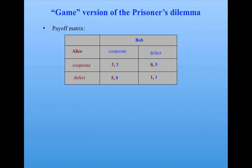When scientists study the Prisoner's Dilemma, they typically phrase it as a game with two players — Bob and Alice. Bob and Alice decide to either cooperate, which corresponds to staying quiet, or defect, which corresponds to testifying against the other. They receive a payoff given by a payoff matrix. Departing from the prisoner story, we assume the higher the payoff, the better. If both cooperate, Alice gets three points and Bob gets three points. If Alice cooperates and Bob defects, Alice gets zero and Bob gets five. If Alice defects and Bob cooperates, Alice gets five and Bob gets zero. And if they both defect, they each get one point.